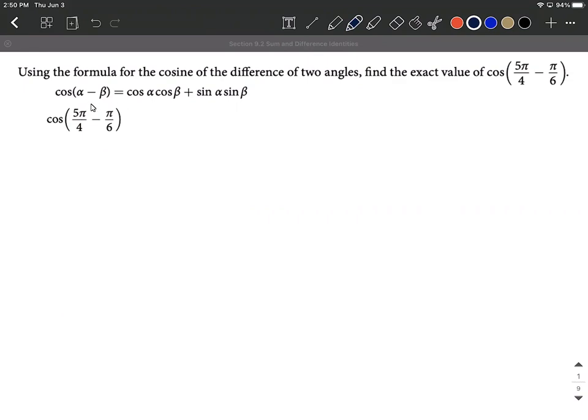I've listed it up above here. We have cos(α - β) = cos(α)cos(β) + sin(α)sin(β). So as we get going on this, I'm first going to label 5π/4 anywhere we have an α, and π/6 anywhere in this formula that we have a β.